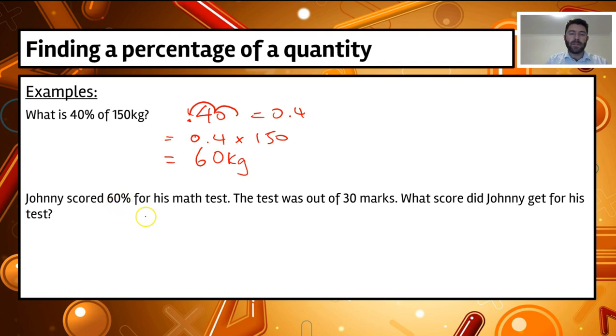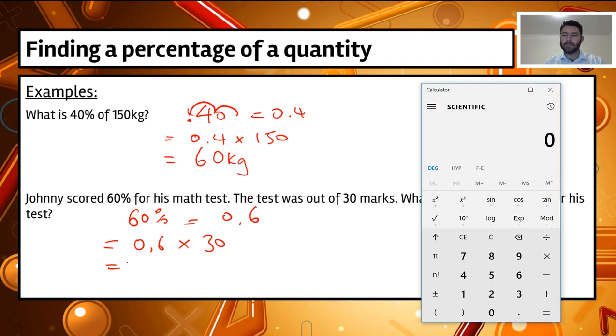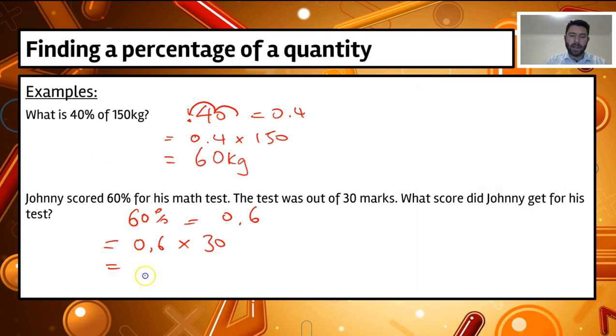First of all, what we need to do is convert 60% to a decimal. Well, 60% equals 0.6, if we move that decimal place two spots. So his score was 0.6 times 30, that equals 18. Johnny got 18 marks out of 30.